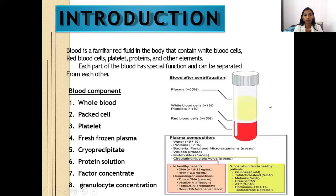Blood is a familiar red fluid in the body that contains white blood cells, red blood cells, platelets, proteins and other elements. Each part of blood has specific special functions and can be separated from each other. The blood components would be whole blood, packed cell, platelets, fresh frozen plasma, cryoprecipitate, protein solution, factor concentrate and granulocyte concentration.